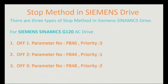Next we will look at the parameter numbers used to enable OFF1, OFF2, and OFF3. For the Siemens SINAMICS G120 AC drive: OFF1 uses parameter P840 with priority 3; OFF2 uses parameter P844 with the highest priority and is the electrical isolation stop; OFF3 is the mechanical stop using parameter P848 with priority 2.